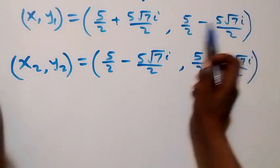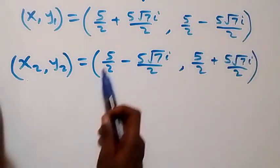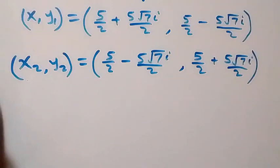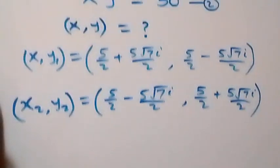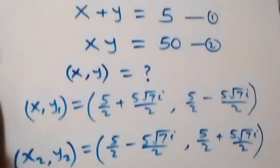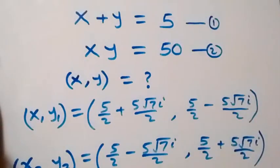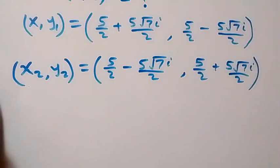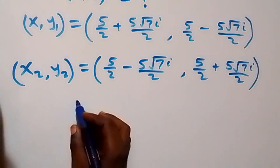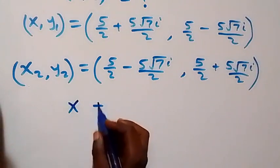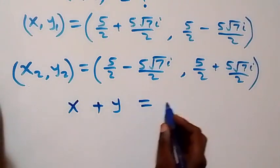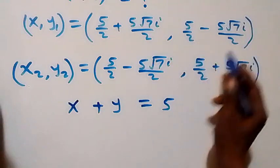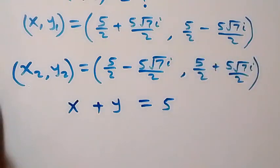Note that the value of x in the second solution is the same as the value of y in the first, and vice versa. Now let's verify these solutions satisfy the given equations. From equation one: x plus y equals five.